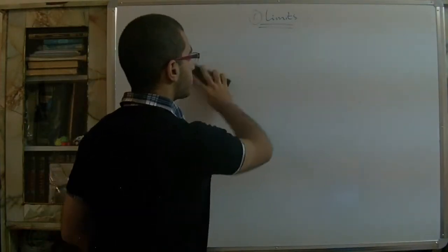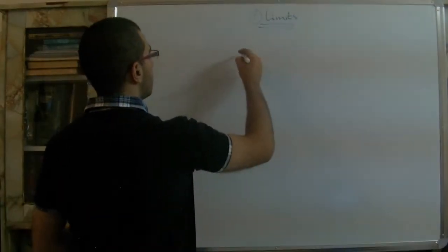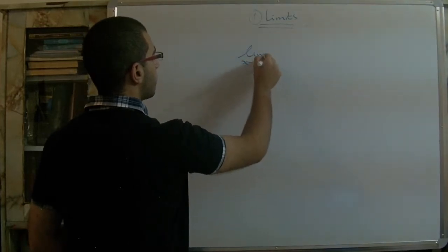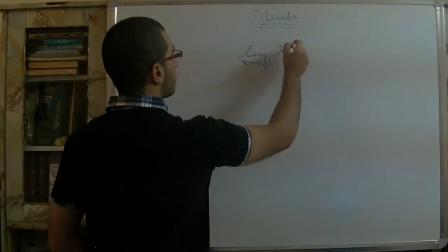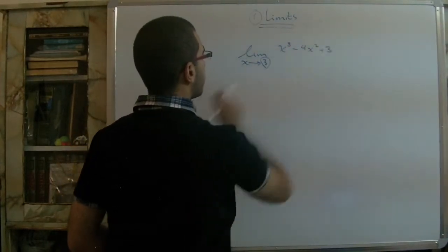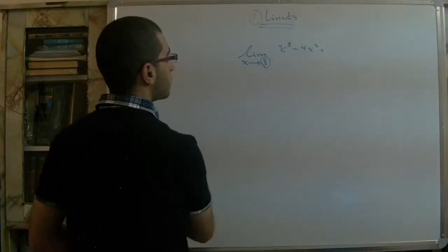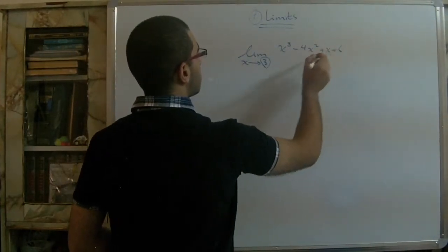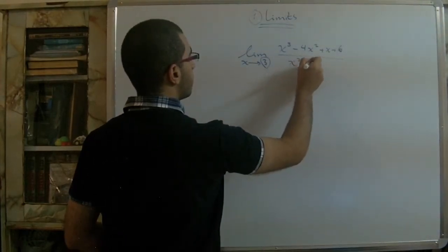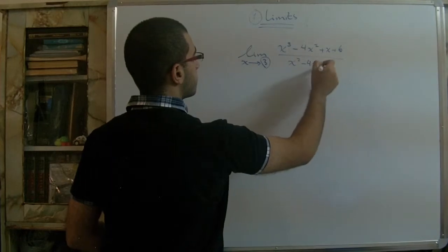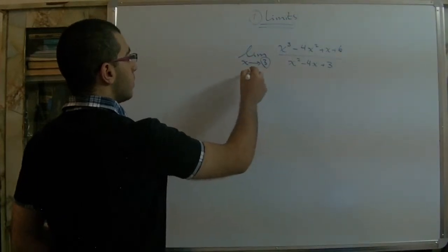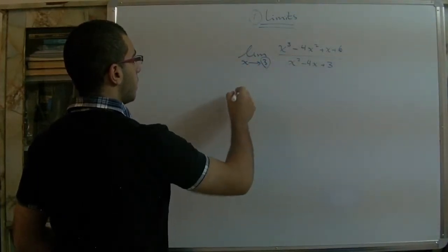For example, if we have the limit as x approaches 3 of (x³ − 4x² + 3x + 6) over (x² − 4x + 3), and we substitute directly with x = 3 into the equation.